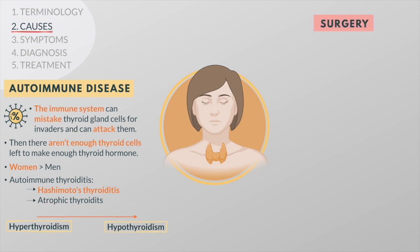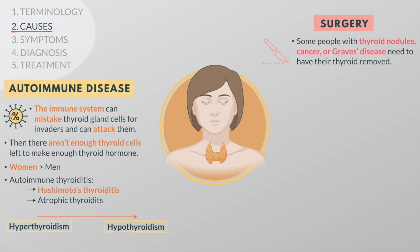Some people with thyroid nodules, thyroid cancer, or Graves' disease need to have part or all of their thyroid removed. If the whole thyroid is removed, people will definitely become hypothyroid. If a part of the gland is left, it may be able to make enough thyroid hormone to keep blood levels normal.